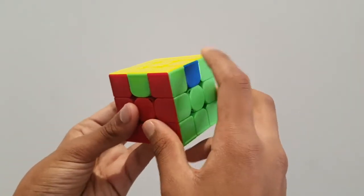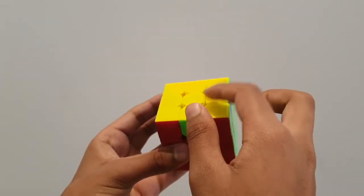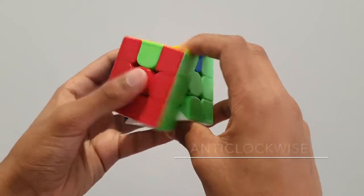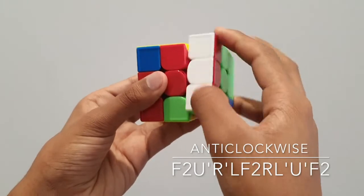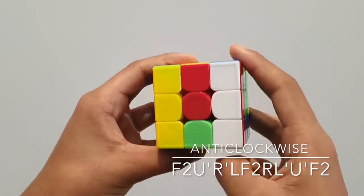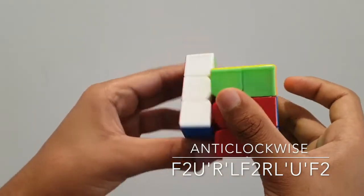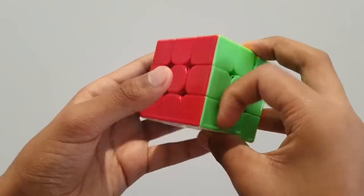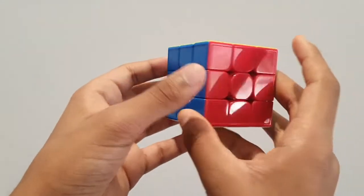If we wish to move these edge pieces in an anti-clockwise motion, we must do this next algorithm. It goes like this: F2, U prime, R prime, L, F2, R, L prime, U prime, F2. That is your solved cube using the anti-clockwise algorithm.